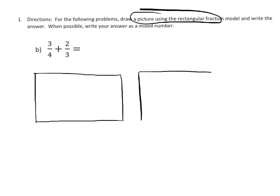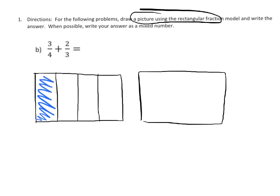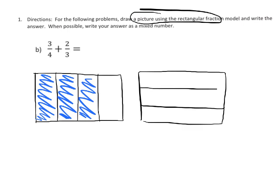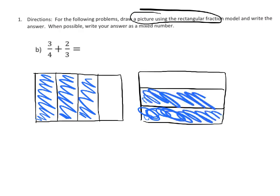We're going to start with two identical area models. Here is three-fourths — one, two, three-fourths — and here is two-thirds — one third and two thirds. So we've got three-fourths on one side and two-thirds on the other.